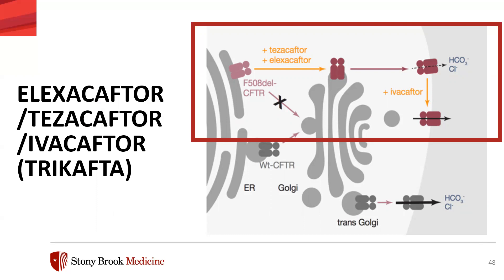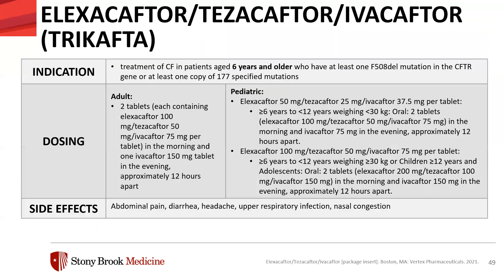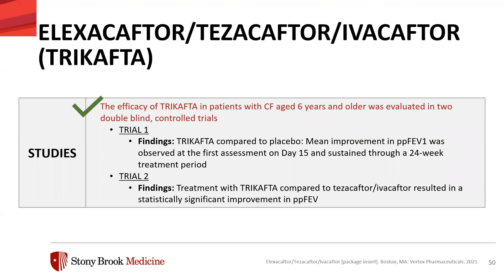To address that limitation, we have Trikafta — made up of two correctors working synergistically at alternate binding sites plus a potentiator. Because Elexacaftor corrects an additional flaw in the formation of the F508del protein, it's included with Symdeco components, helping the CFTR protein perform better for an even greater number of people with CF. Trikafta is indicated for patients six years and older who have at least one F508del mutation or at least one copy of 177 specified mutations. Its side effect profile includes headache or nasal congestion. In two trials — Trikafta versus placebo and Trikafta versus Symdeco — Trikafta showed statistical significance in FEV1 improvement in both.